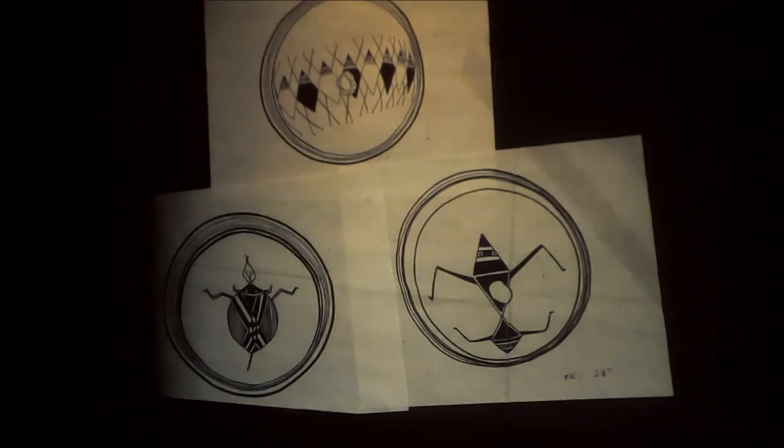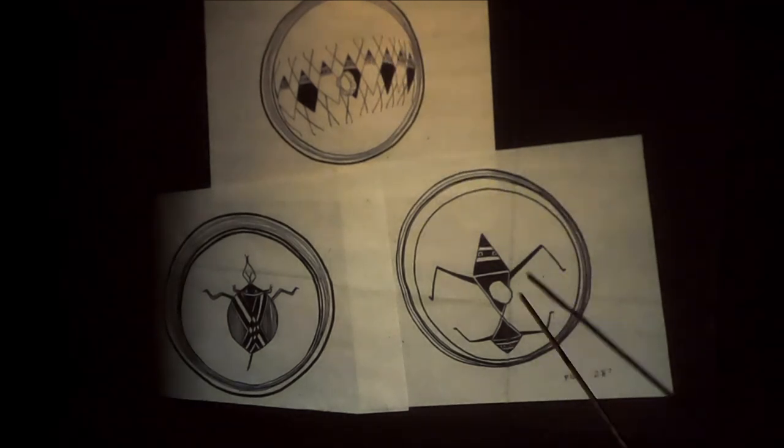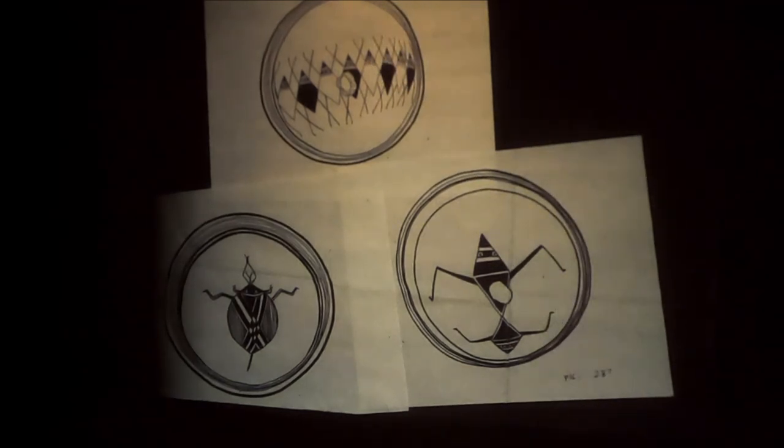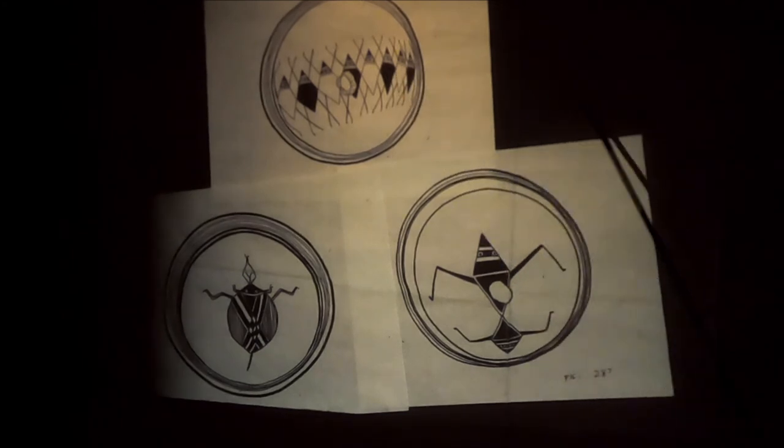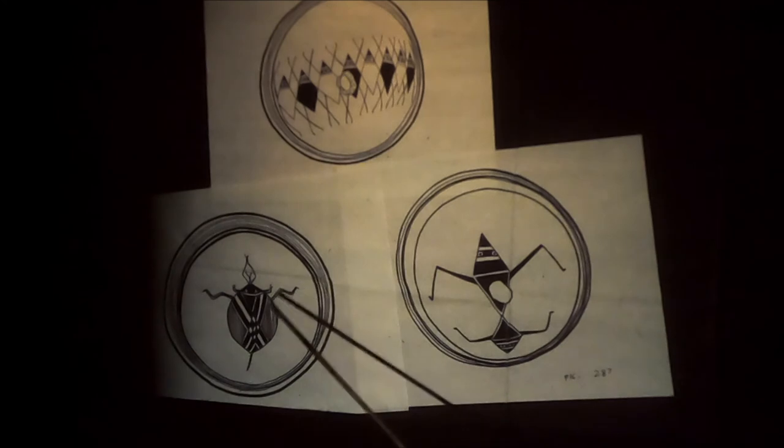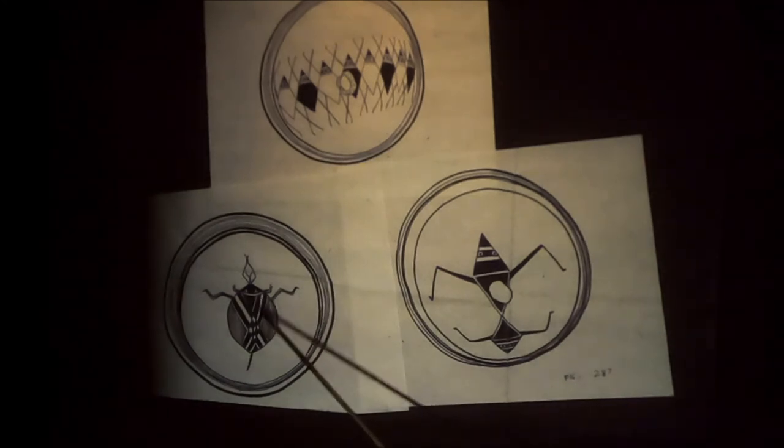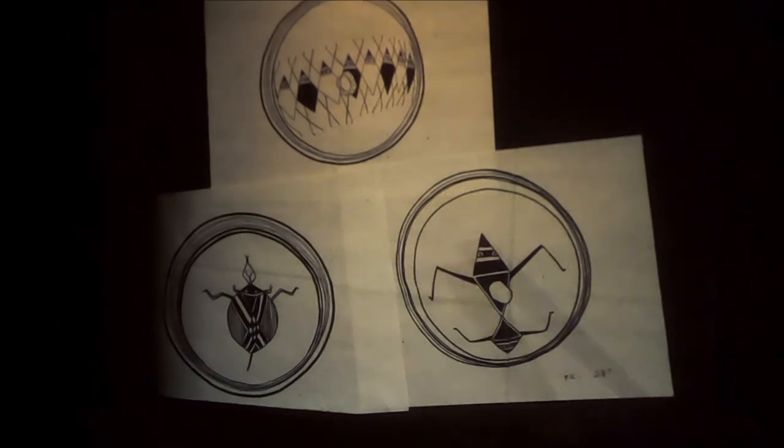These are water bugs, pond skaters. A lot of people call them water spiders. They skim along on the surface of the water. They're actually an insect. This is a water beetle, or I think they call it a boatman, a little underwater beetle. These are all water insects.